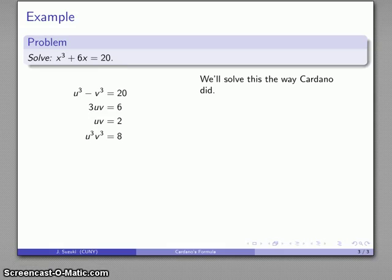The reason this form is interesting is if I think about u³ and v³ as being variables m and n, then what I have here is I have the difference of two things and the product of two things. This is a very classic form of an algebra problem. If you have the difference of two things and the product of two things, can you find what the things are? We can do that as follows.